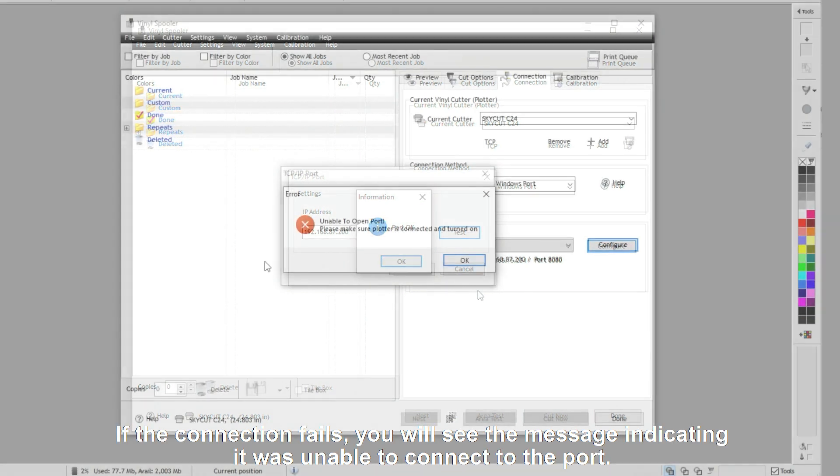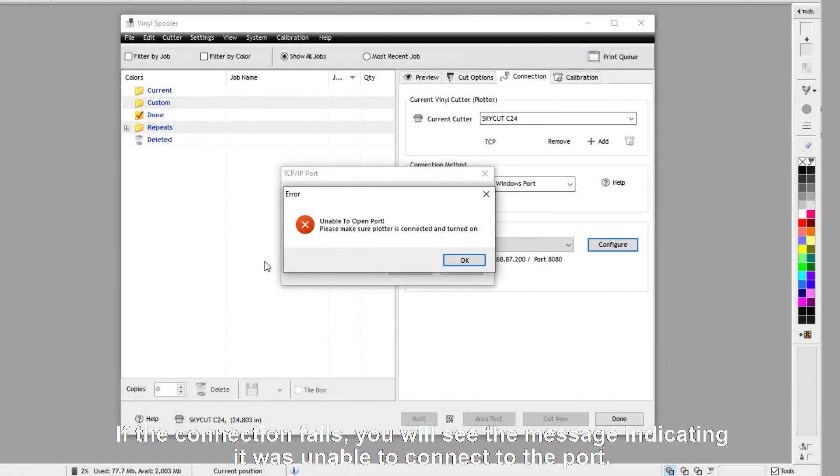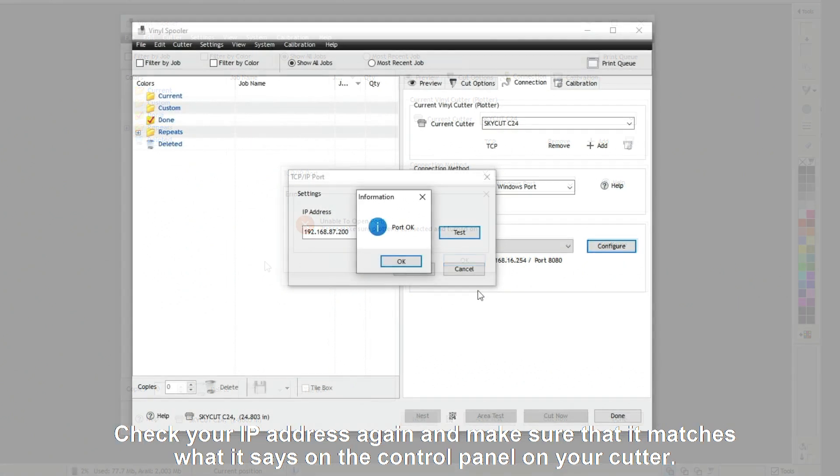If the connection fails, you'll receive a message indicating it was unable to connect to the port. Check your IP address again and make sure that it matches what it says on the control panel on your cutter.